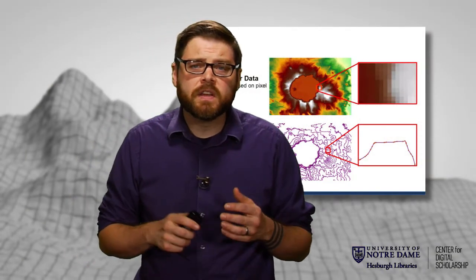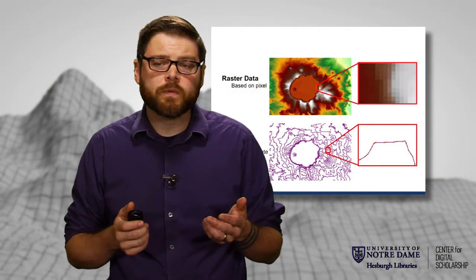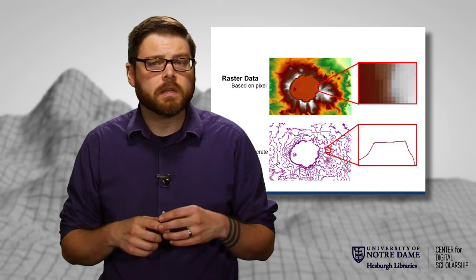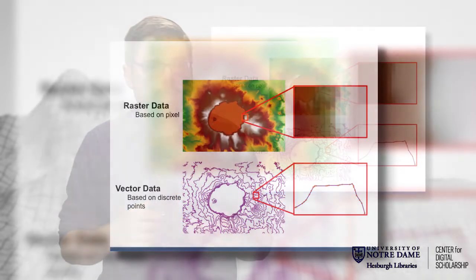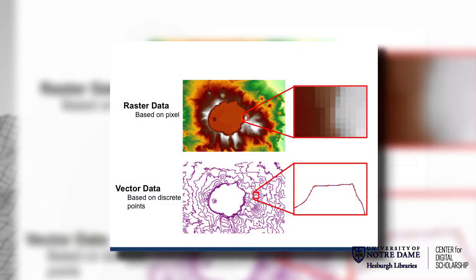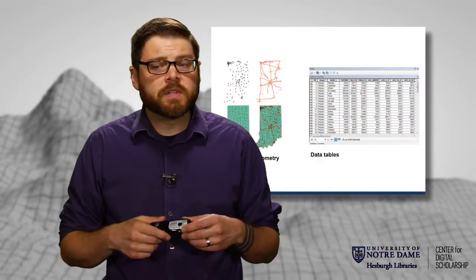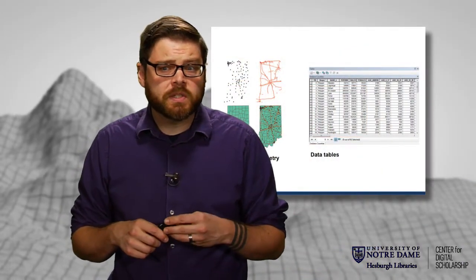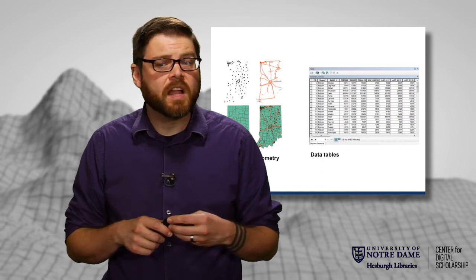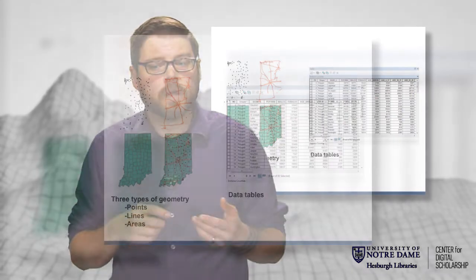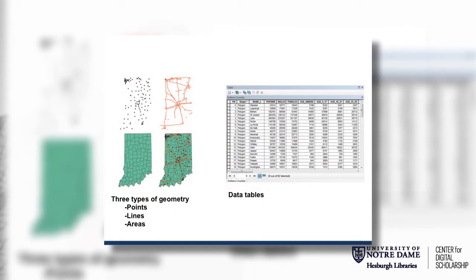The contrast to this is the vector data model, where if we zoom in far enough, we eventually see individual points and how they're related to each other. You can see that on the bottom part of this slide, where points are related together into topographic lines. There are three different types of vector geometries: points, which are zero-dimensional; lines, which are one-dimensional; and areas, which are two-dimensional. We refer to these as points, polylines, and polygons.